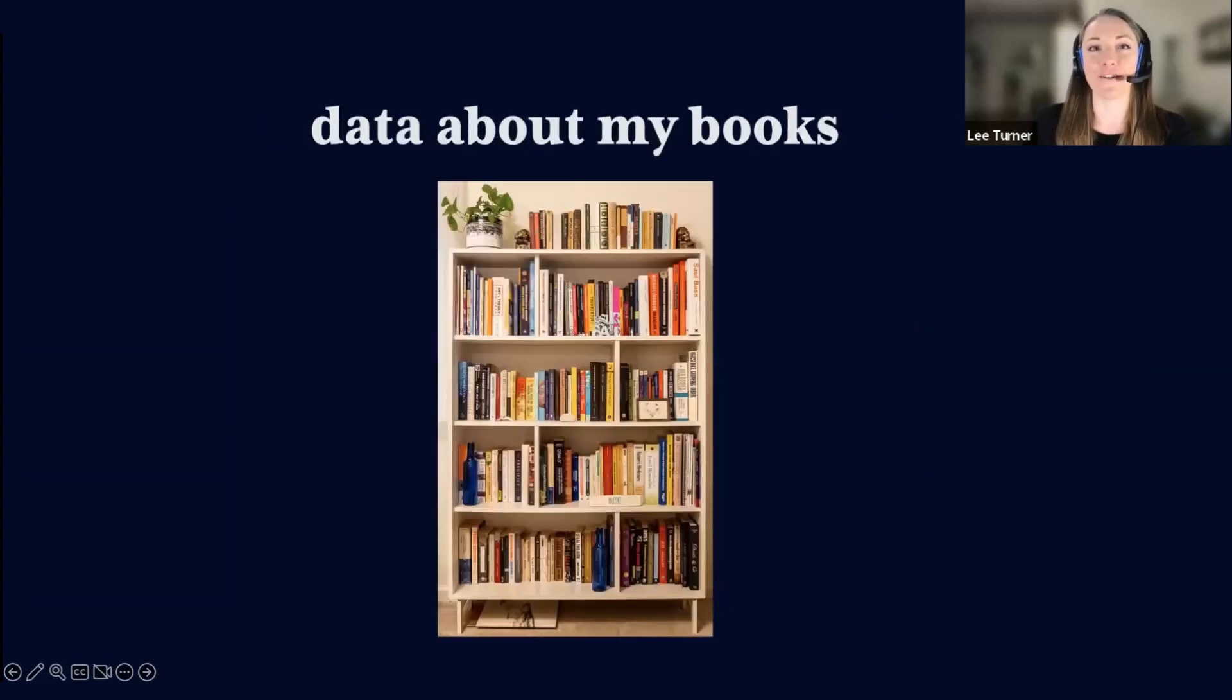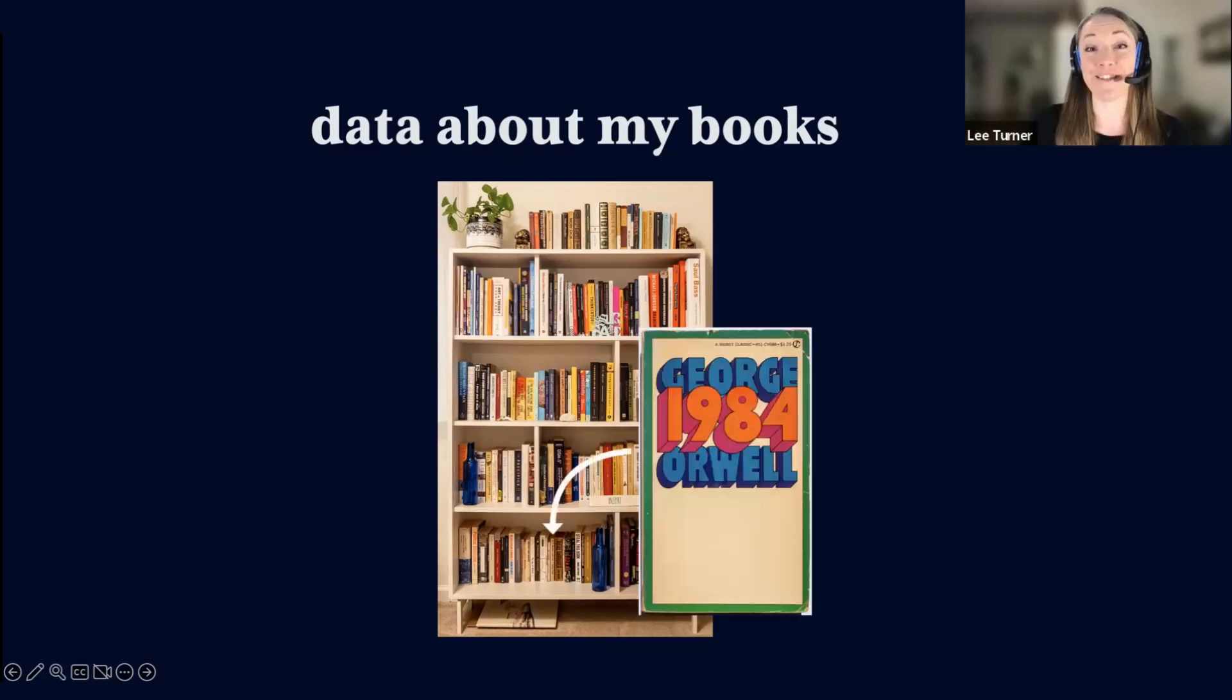One project I worked on in the fall, I called Bibliophile. This project's data set shows information about all of the books in my apartment on October 9, 2022. A total of 232 books are in the snapshot. Let's follow one book through the process. George Orwell's 1984.